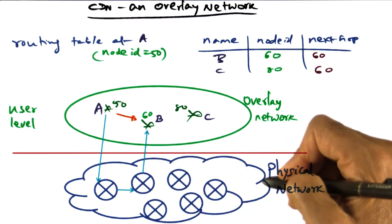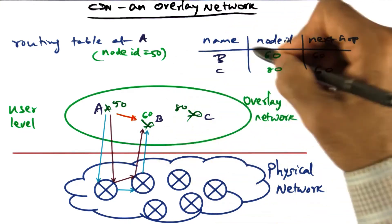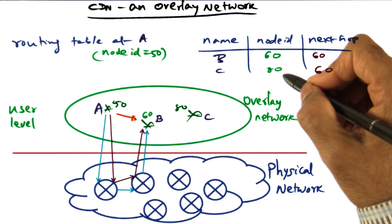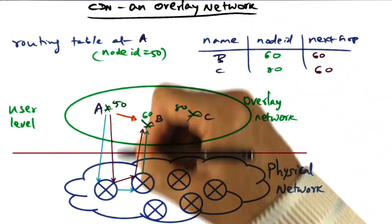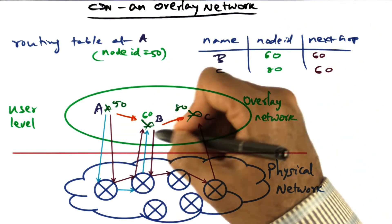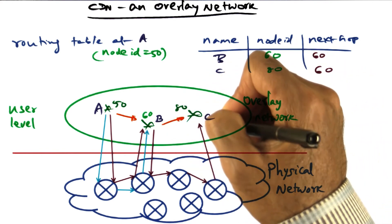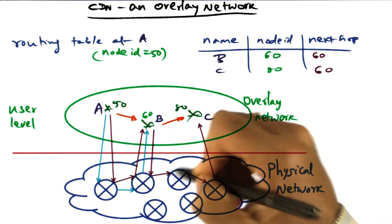The physical network is much more elaborate than this user-level overlay network. For instance, to send a message to C (node ID 80), I don't know how to reach him directly. But if I give it to my buddy B at node ID 60, he knows how to get it to C. So I send it to B, who knows from his routing table the IP address for C and forwards it there.